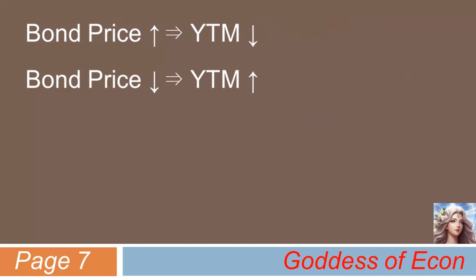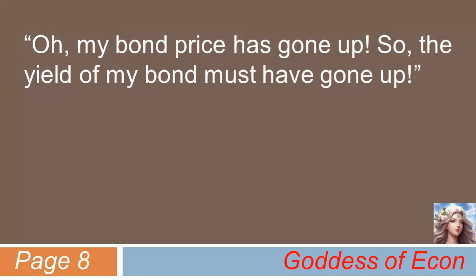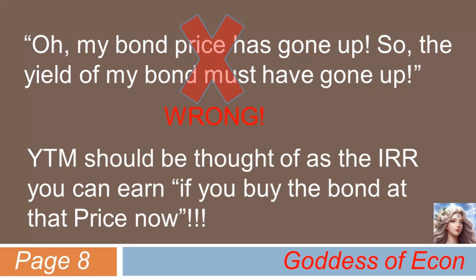So, we have seen that when the bond's price goes up, the YTM goes down, and when the bond's price goes down, the YTM goes up. This is because the YTM is the IRR you can expect if you purchase the bond at that price. The more expensive the bond becomes, the less return you can expect to earn. But some people would say, 'Oh, my bond price has gone up, so the yield, thus the return, of my bond must have gone up as well.' But this statement is false. Because the yield to maturity is the IRR you can earn if you buy the bond at that price now and hold it until maturity. So, think of it as the expected return you assess right before you purchase the bond, not after.